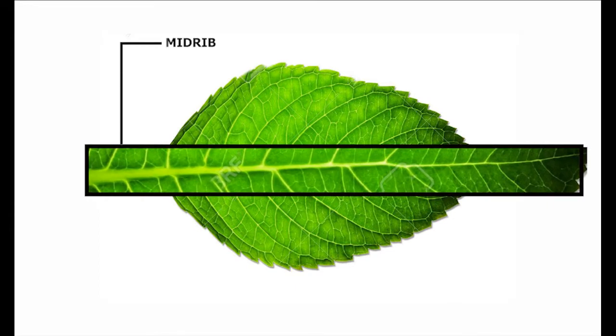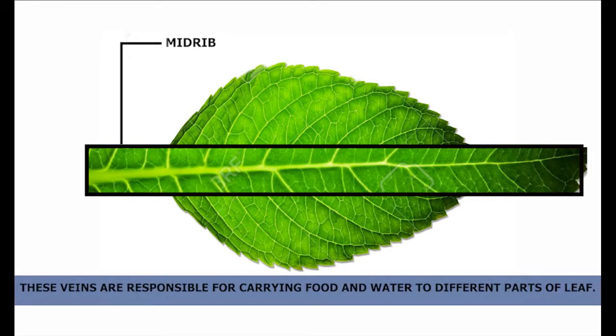3. Midrib. On the lamina, there is a main vein called midrib. Other veins are branched out from midrib. These veins are responsible for carrying food and water to different parts of the leaf.